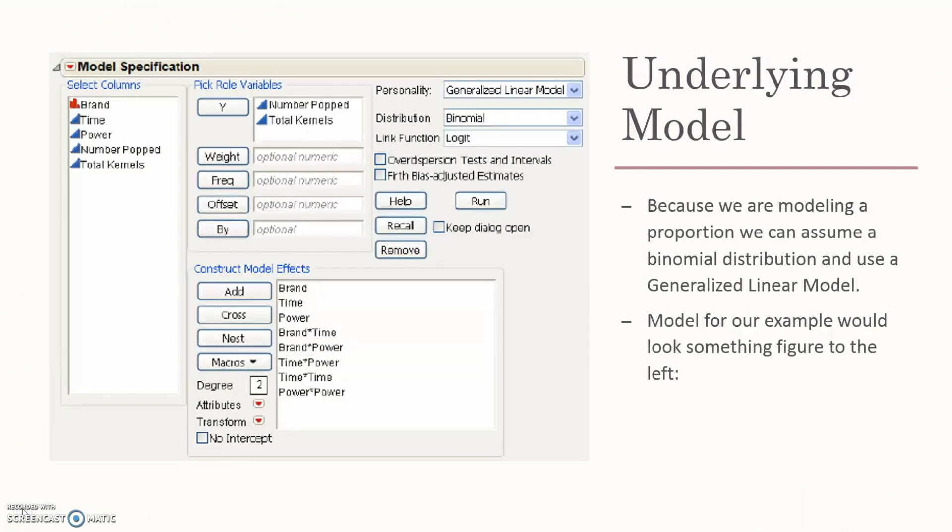Now we're talking about the underlying model for our popcorn data. Because we're modeling a proportion, we can assume it's a binomial distribution and use a generalized linear model. The model for our example includes setting up your Y variables and your interactions, and then you just hit run.